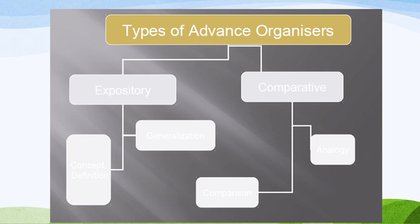Advanced organizers are of two types: expository and comparative. The expository type is generally used in the lecture method. We start with some concepts — like parts of speech or geometrical shapes such as square or rectangle — providing concept definitions and generalized statements that move to specific forms. The comparative type uses analogy — connecting new content to something from real life that students already know — and this is how we link to the topic.